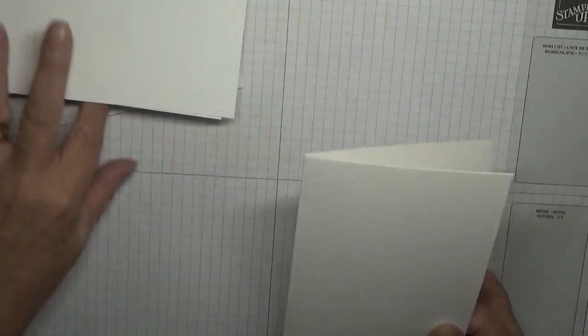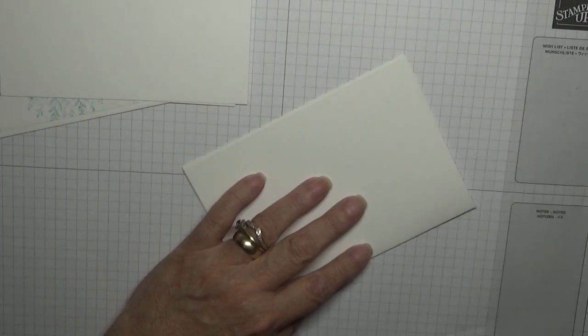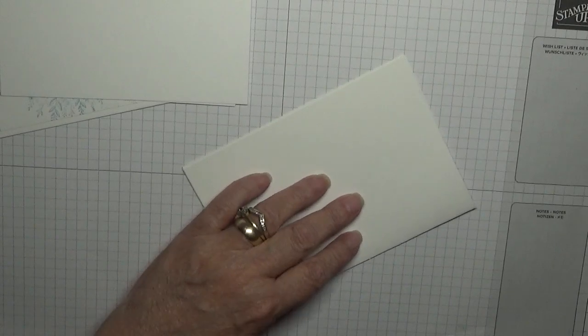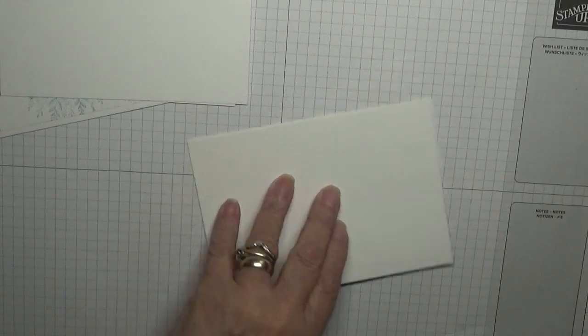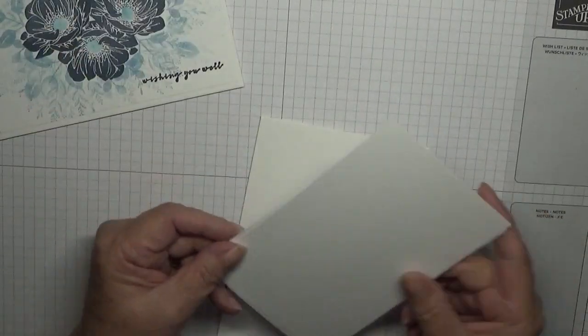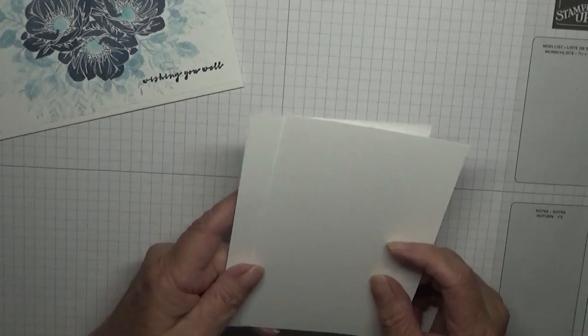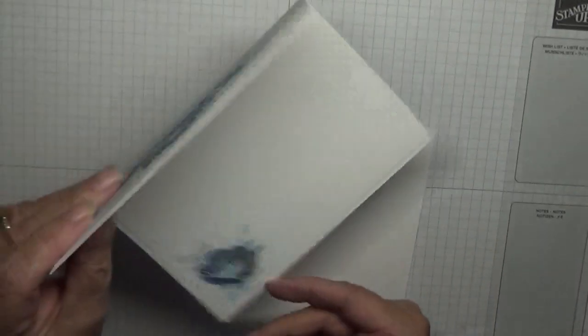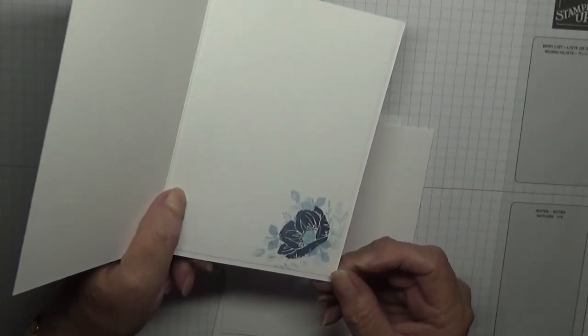Cardstock is a card base of 8 and 1/4 by 5 and 7/8 scored at 4 and 1/8, folded in half and burnished, and two pieces of white cardstock 5 and 5/8 by 3 and 7/8, one for the inside and one for the top. I did do the small flower inside with a couple of leaves around it.